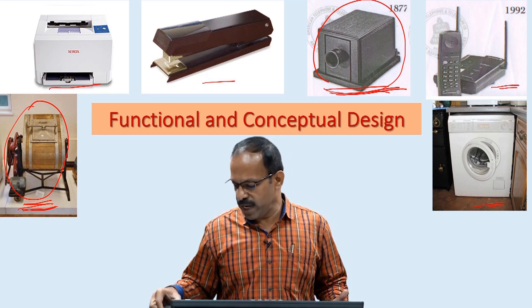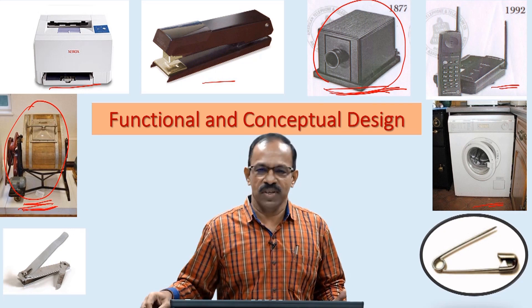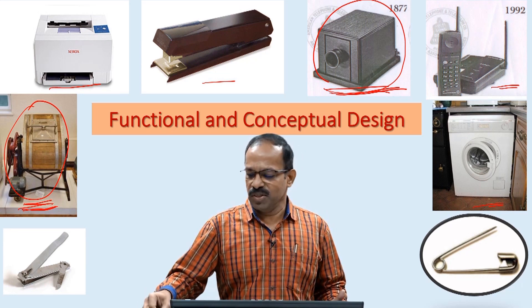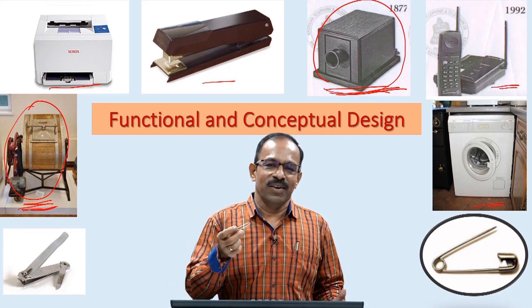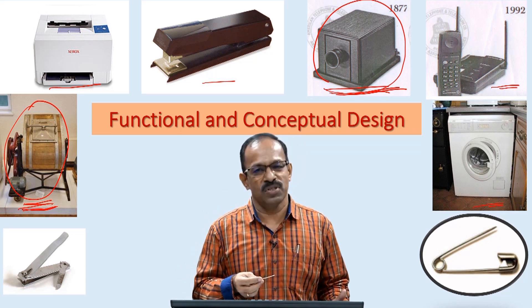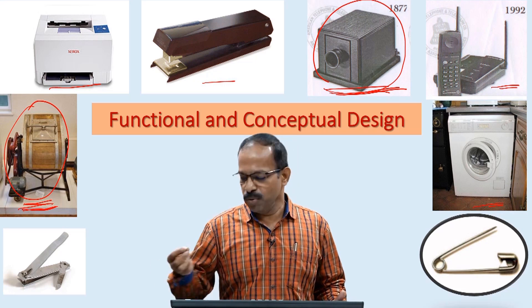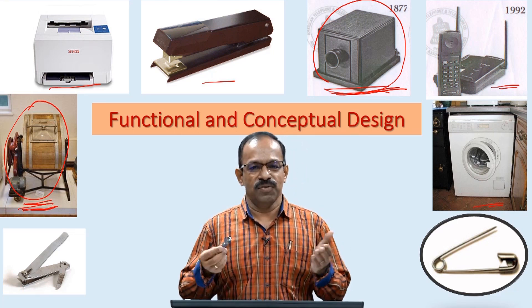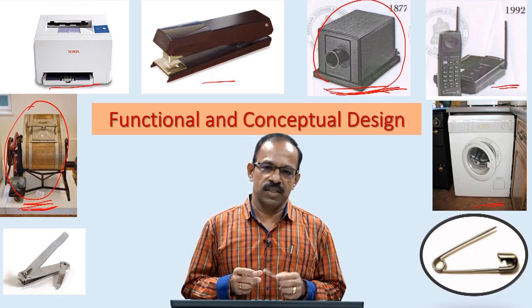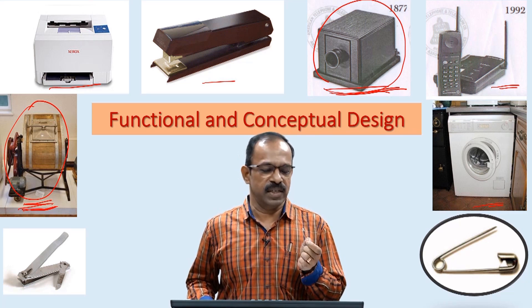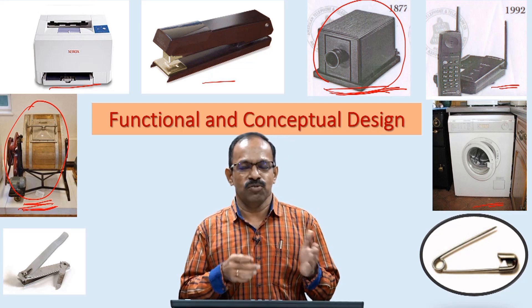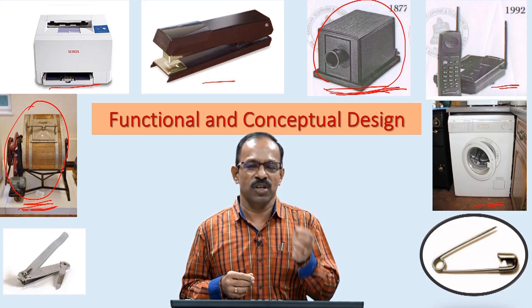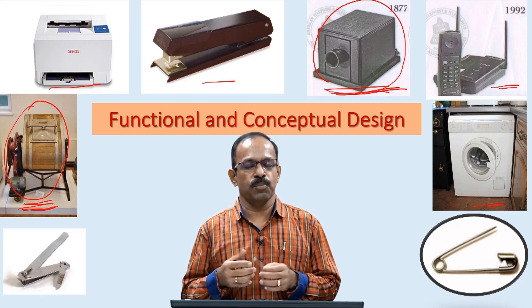But if you look at the products on the screen now, you can see a safety pin and a nail cutter. If you look at these two products — the safety pin — you might have used it, your parents would have used it, your grandparents would have used it, and the next generation are also going to use it. Similarly with the nail cutter — I have seen this nail cutter for the last 50 years. These products have remained the same for a long time; they have not changed for the last 100 years. But the same is not applicable to so many other products in the market. So what is it that makes a product stable and not changing?